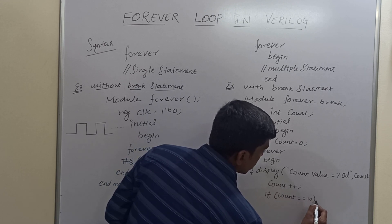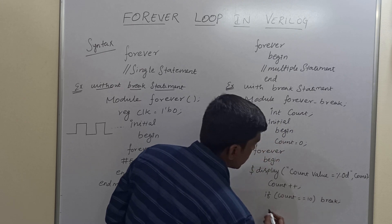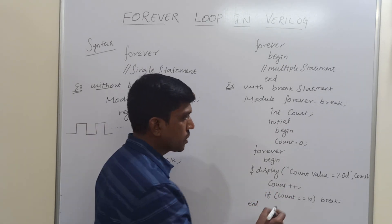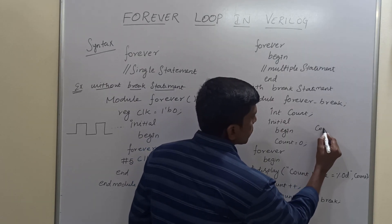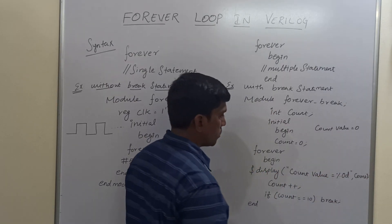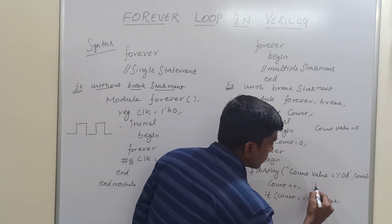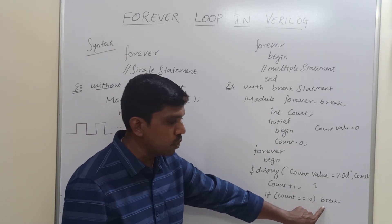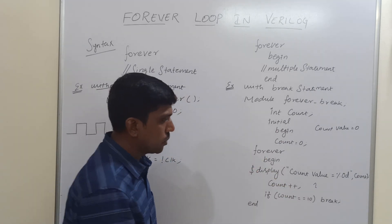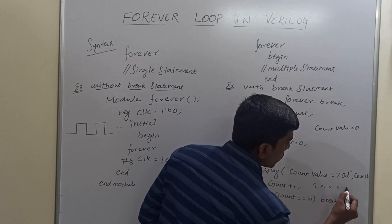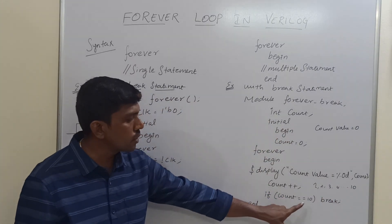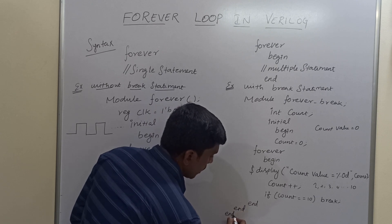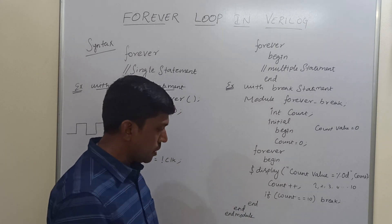Then count is incremented using count++. After incrementing, the condition is checked: if count equals 10, break the loop and exit. If count is not equal to 10, the loop executes again, incrementing count through 1, 2, 3, 4 up to 10. When count equals 10, break the loop — this loop will exit, then end, end module.